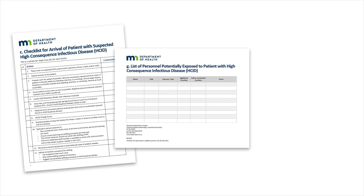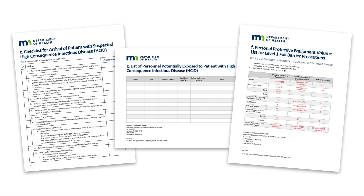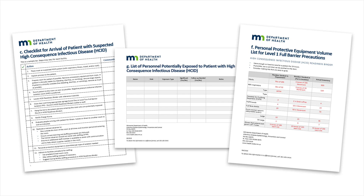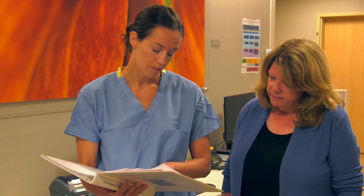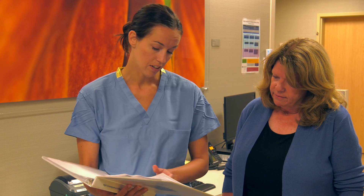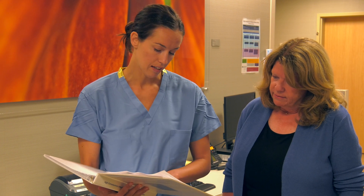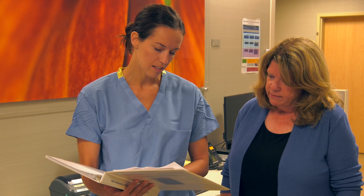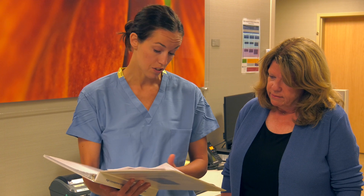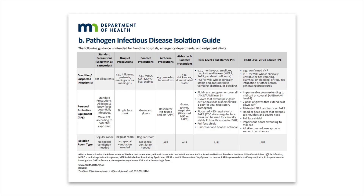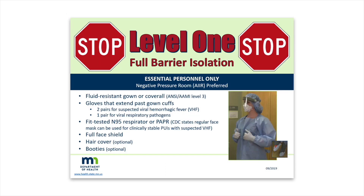There's a log I can use to document anyone going in and out of this room, and a list that the hospital created to tell me where I can find more PPE if we need it. And a lot of other things to consider if we end up deciding to fully activate our HCID plans. But now, I wonder what kind of isolation sign I should put on this door. Let me look at the pathogen-specific isolation guide in the readiness binder. It looks like it's level one, so I'll go put this on the door.